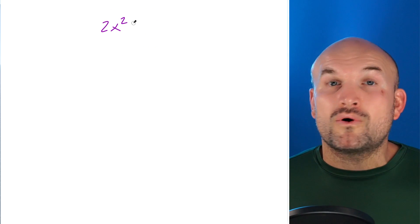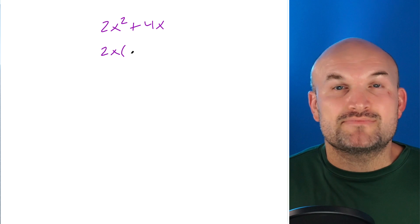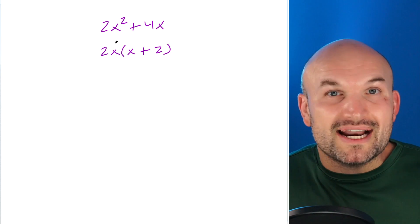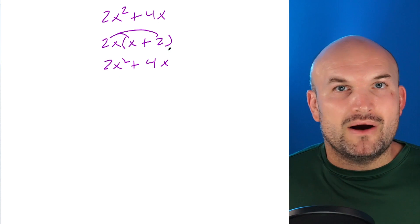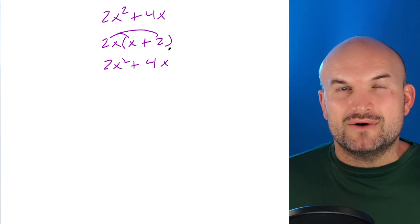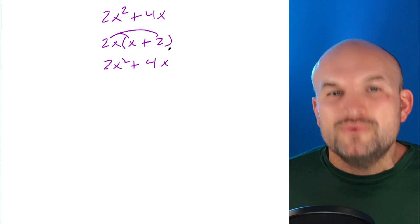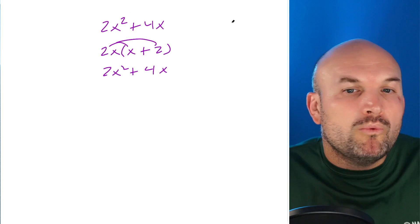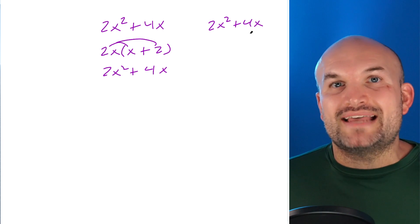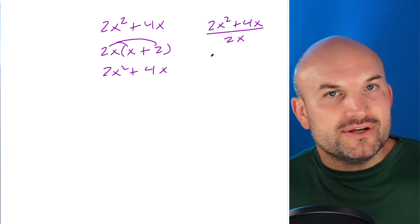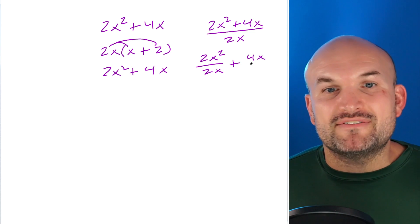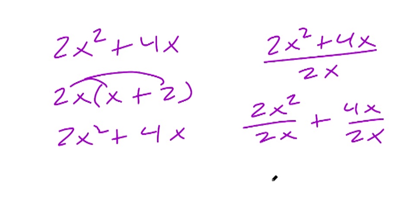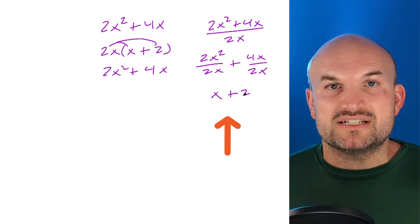For example, 2x² + 4x can be factored into 2x times (x + 1). Since it's written as a product, I can multiply it back to get 2x² + 4x. What we're really doing is dividing out what the terms have in common. I put 2x on the outside of the parentheses — in reality I was dividing each term by 2x: 2x² ÷ 2x and 4x ÷ 2x, giving the result x + 2.